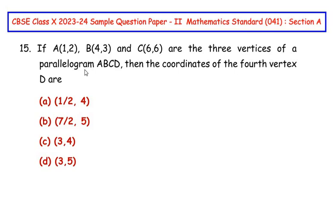Now this question is from the coordinate geometry chapter. If A(1,2), B(4,3) and C(6,6) are the three vertices of a parallelogram ABCD, then the coordinates of the fourth vertex D are.